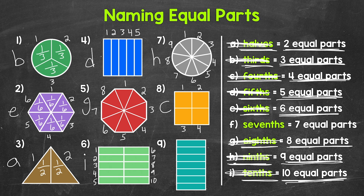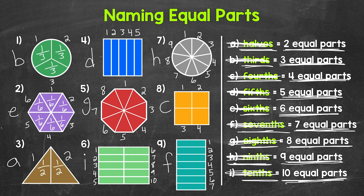And lastly, number 9, we have a whole that has been divided into 1, 2, 3, 4, 5, 6, 7 equal parts. We call 7 equal parts sevenths. So let's put an F next to number 9 and cross off sevenths. Each one of those equal parts is 1 seventh of the whole.